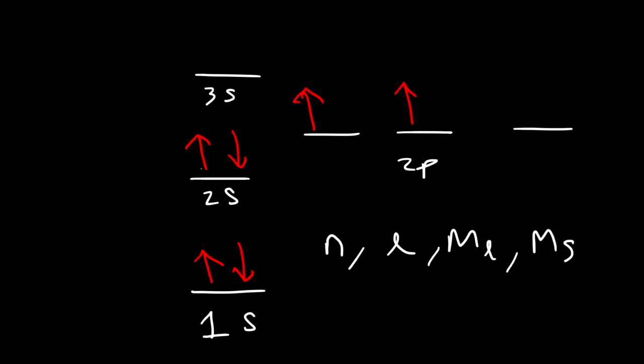So for up arrows, the electron spin is plus one-half, and for down arrows, it's negative one-half.